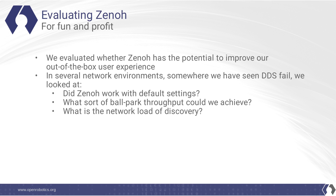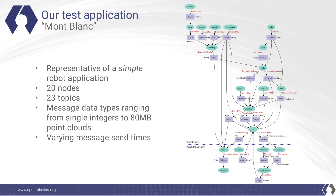We evaluated whether Zenoh has the potential to improve our out-of-the-box user experience in several network environments where we've seen DDS fail, looking at whether Zenoh works with default settings, what sort of ballpark throughput we could achieve, and what the network load of discovery is. To evaluate this, we produced a sample ROS application originally created by iRobot for federation of ROS, called the Montblanc scenario. It's representative of a simple robot application with 20 nodes and 23 topics — which seems like a lot compared with most example applications, but most robotics applications typically have far more nodes and topics. We also have message data types ranging from single integers to 80-megabyte point clouds that need to be delivered in a timely fashion at various execution rates.